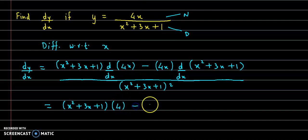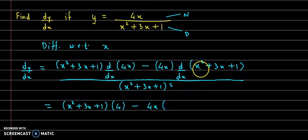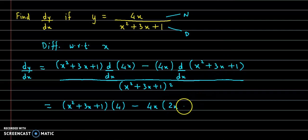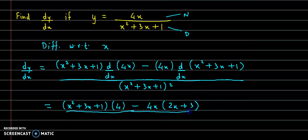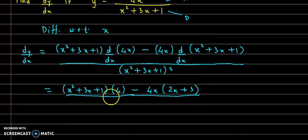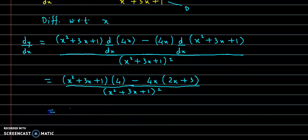Minus 4x into: the derivative of the three terms — x square gives 2x, then 3 times x gives 3, and 1 is a constant so its derivative is 0. Bracket close. And below, divided by denominator square, that is x square plus 3x plus 1 the whole square.